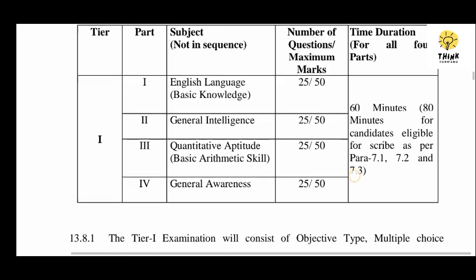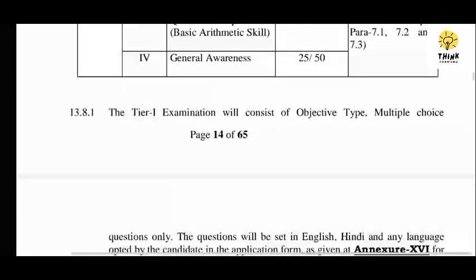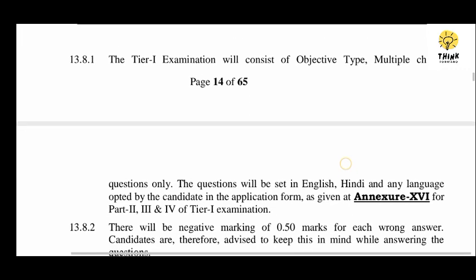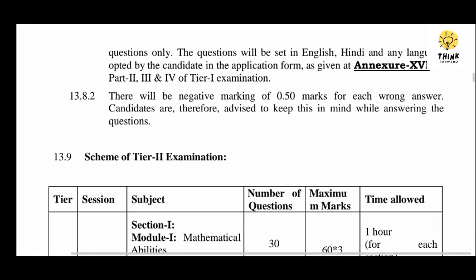This is about 60 minutes, and about 80 minutes for the candidate eligible for the script as per sections 7.1 and 7.2, or 60 minutes otherwise. The duration for remaining sections is also 60 minutes each.